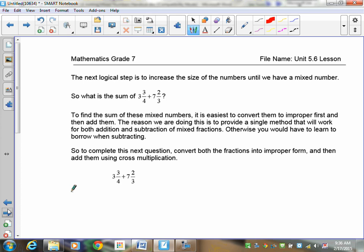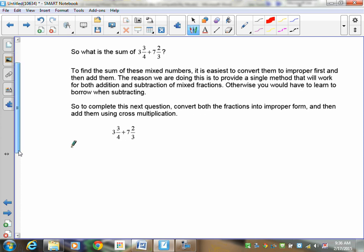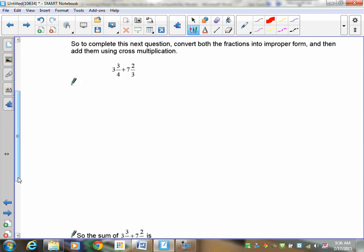Now when we get to mixed fractions, our first thing is to go back and convert both of them to improper. And then once I've got them in improper form, then I'm going to add them by using cross multiplication. So 3 and 3 quarters has to be converted to an improper form. So 4 times 3 is 12, 12 and 3 is 15, so this becomes 15 quarters. 3 times 7 is 21, and 21 plus 2 is 23, which is why I have 23 thirds here.